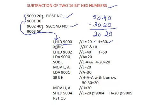Then I am exchanging HL with the DE register pair, because for a while I have to keep the first number aside — meaning in DE. Then I need to fetch the second number into HL again. For that purpose I am using the XCHG instruction, which swaps the HL register pair values with the DE register pair.